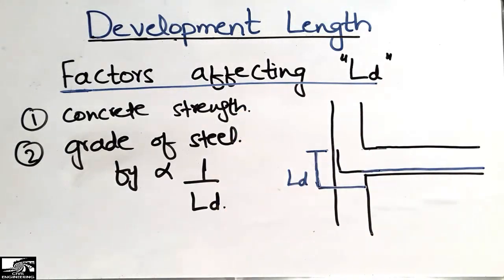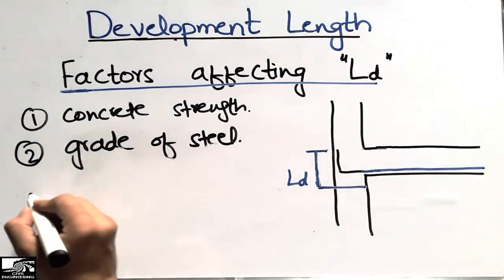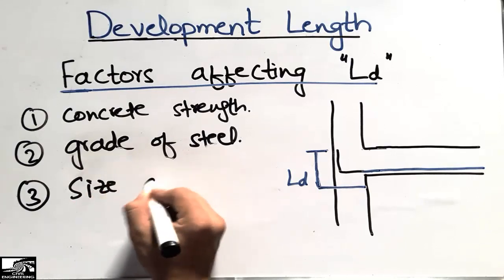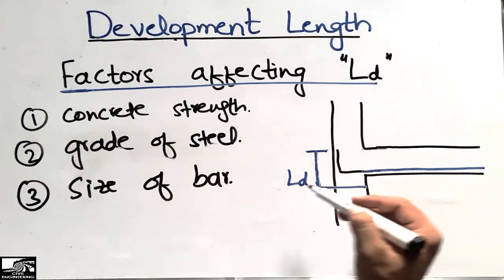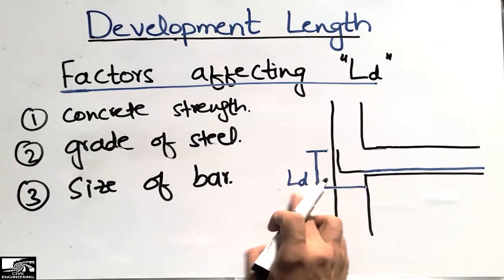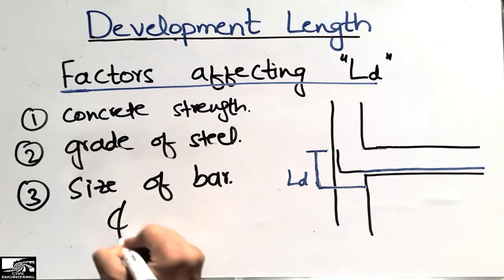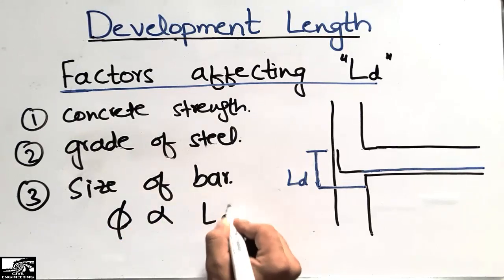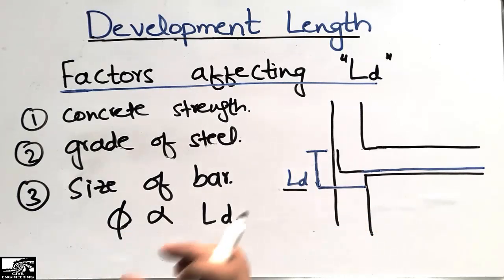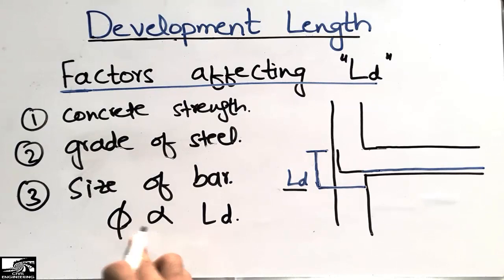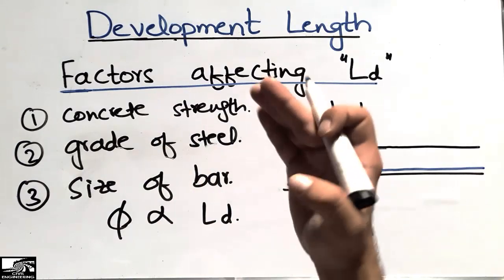The last factor affecting development length is the size of bar used. Bar size has a direct relation with development length. If a larger diameter bar is used, the development length is more. If a smaller diameter bar is used, the development length is less. So higher bar diameter means more development length is required.